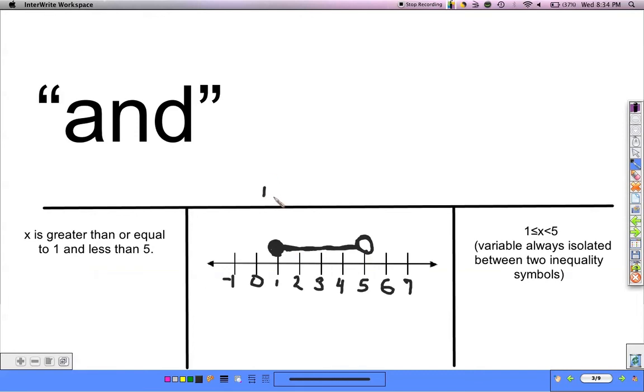So if I say x is greater than or equal to 1 and less than 5, x could be 1, it could be 1.1, it could be 2, it could be 3, it could be 4, it could be 4.9, it could be anything that's less than 5 or greater than or equal to 1. Anything that fits that definition.